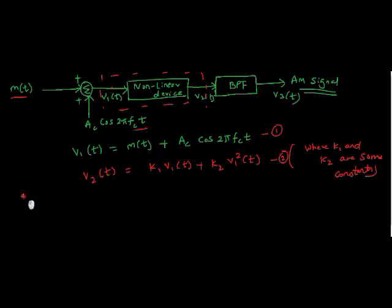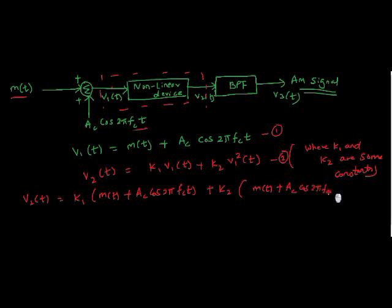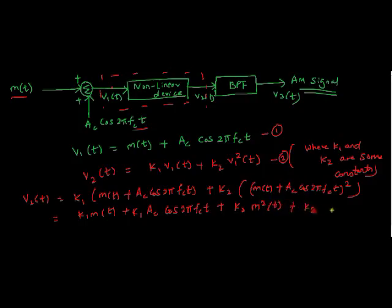We will write it down. V2(t) is equal to K1 times (m(t) + Ac*cos(2πfct)) plus K2 times (m(t) + Ac*cos(2πfct))². This is the full square. Simplifying this, we get K1*m(t) plus K1*Ac*cos(2πfct) plus K2*m²(t).